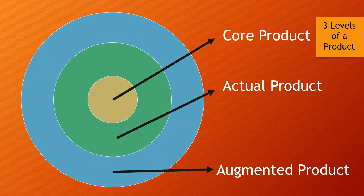Customers often think that the product is simply the physical item they buy. But when we explore the nature of a product further, we want to look at what we call the three levels of products: the core product, the actual product, and the augmented product.